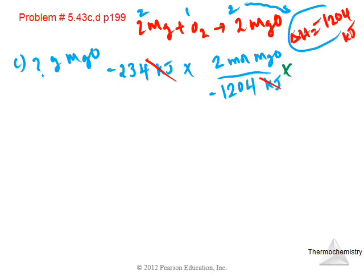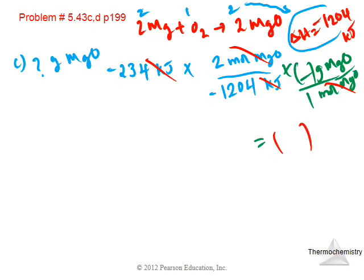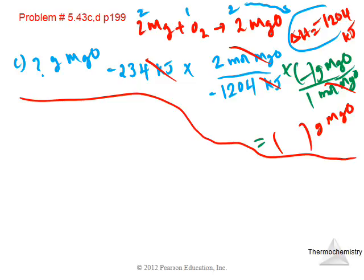Next, convert moles of MgO to grams using the molar mass. The molar mass of MgO is 24.3 (Mg) plus 16 (O) = 40.3 grams per mole. So multiply by (40.3 g MgO / 1 mol MgO). Moles of MgO cancel out, leaving grams of MgO as the final answer. Make sure you finish this calculation independently.